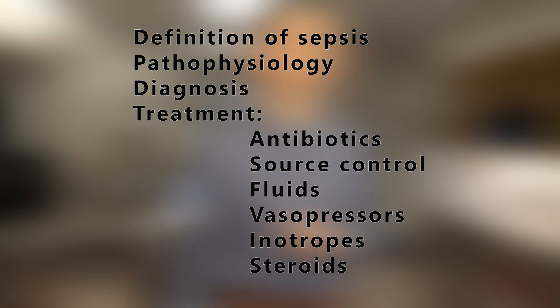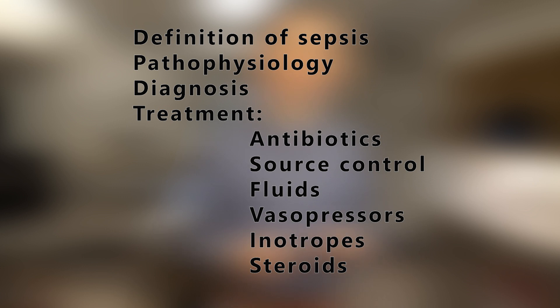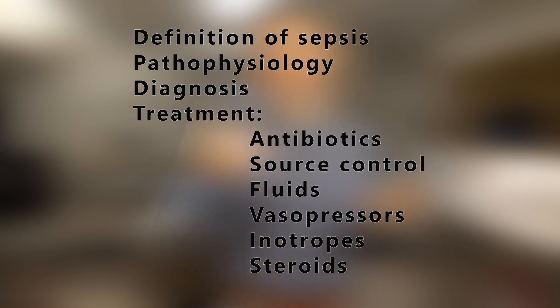Today we covered sepsis and septic shock. We discussed the definition of sepsis using criteria established by the Society of Critical Care Medicine, reviewed the multiple sources of sepsis, went over some of the pathophysiology and various organ failures, and concluded by discussing how to diagnose and treat sepsis using antibiotics, source control, fluids, vasopressors, inotropes, and steroids. In the next video, we'll talk about hypovolemic shock and specifically hemorrhagic shock. Thanks for watching.